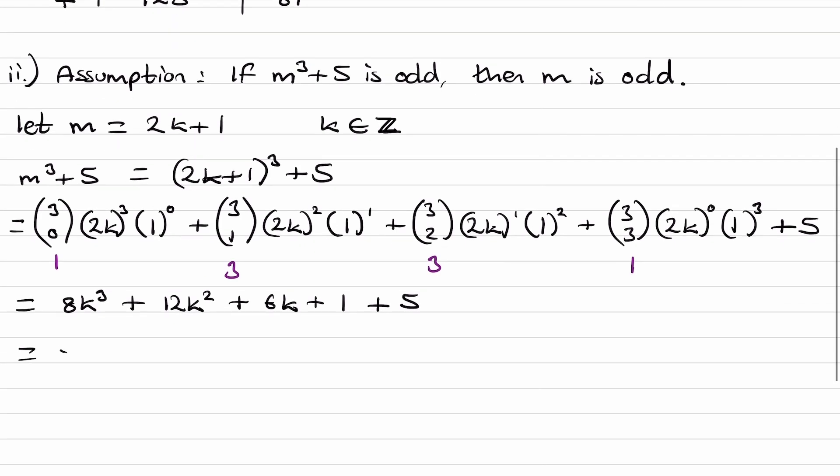So this is equal to what we have here, plus 5. Rewriting that, 8k cubed plus 12k squared plus 6k plus 6, which you can also write as, so take out a factor of 2. This then becomes 2 times 4k cubed plus 6k squared plus 3k plus 3. So this here is 2 multiplied by an integer.